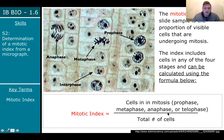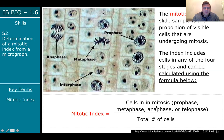A cell in interphase is not part of mitosis — you can review that in sections A and B. Only cells in prophase, metaphase, anaphase, and telophase go in the numerator. That's why it's called the mitotic index.